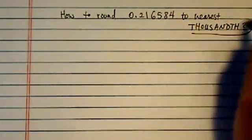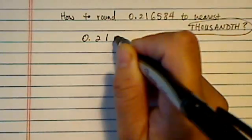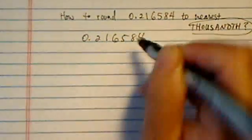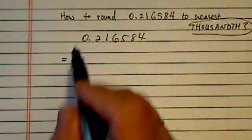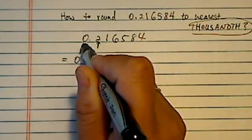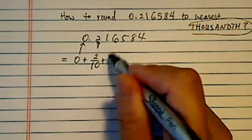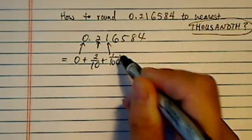So let's talk about what thousandth place is. If 0.216584 is written into fraction form, this place over here is 0, that's this one, plus 2 over 10, that's tenth place, plus 1, that's hundredth place.